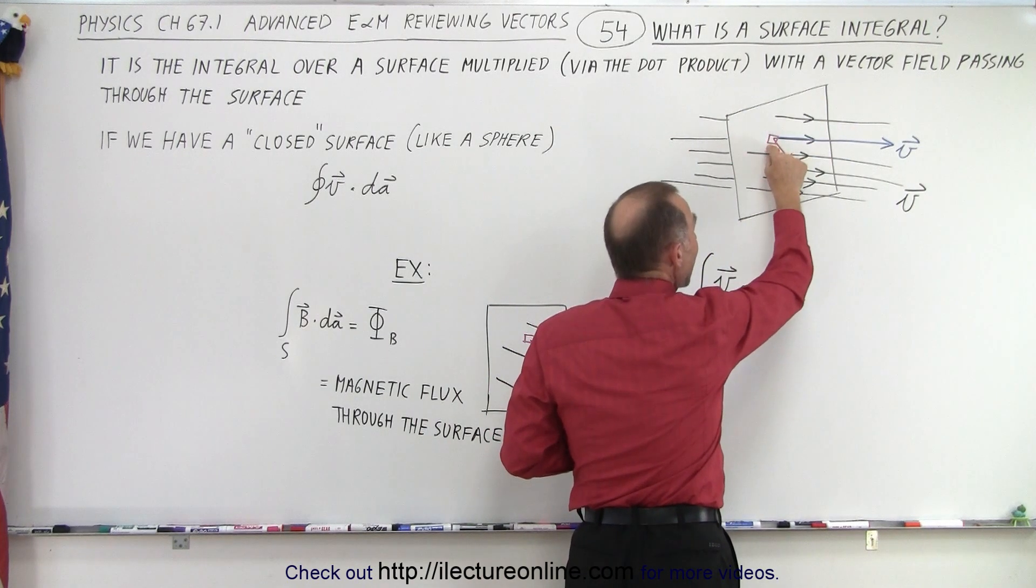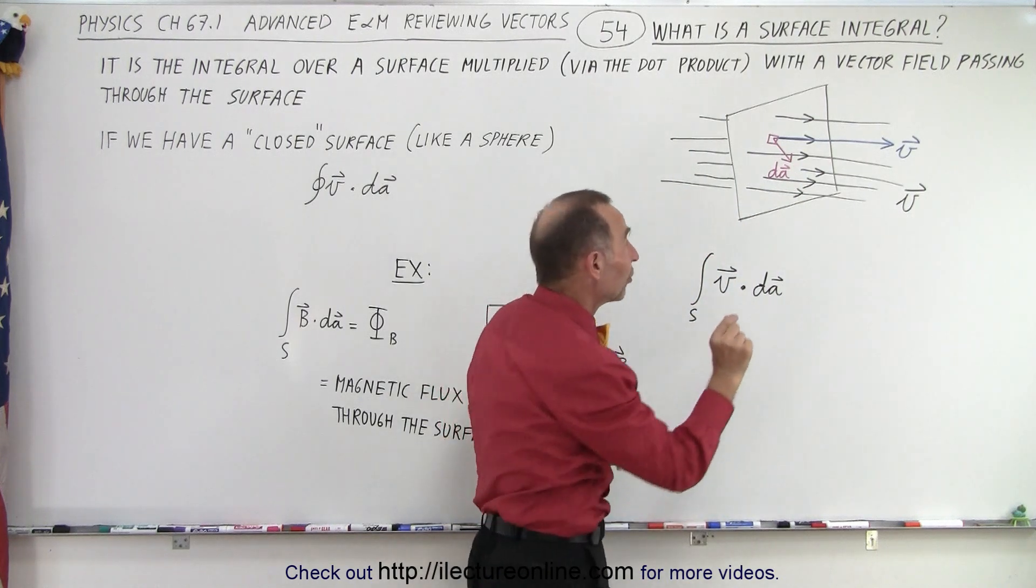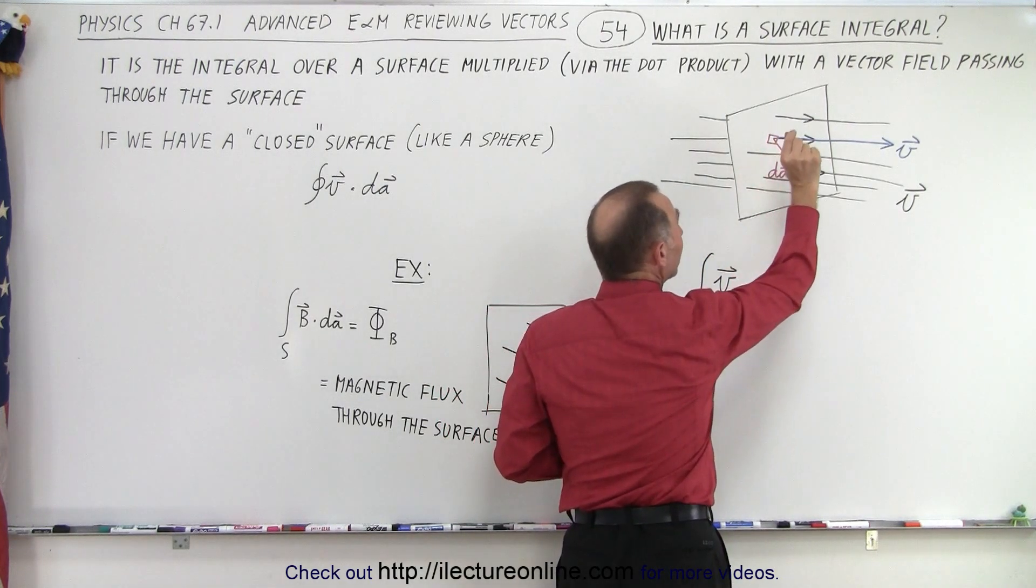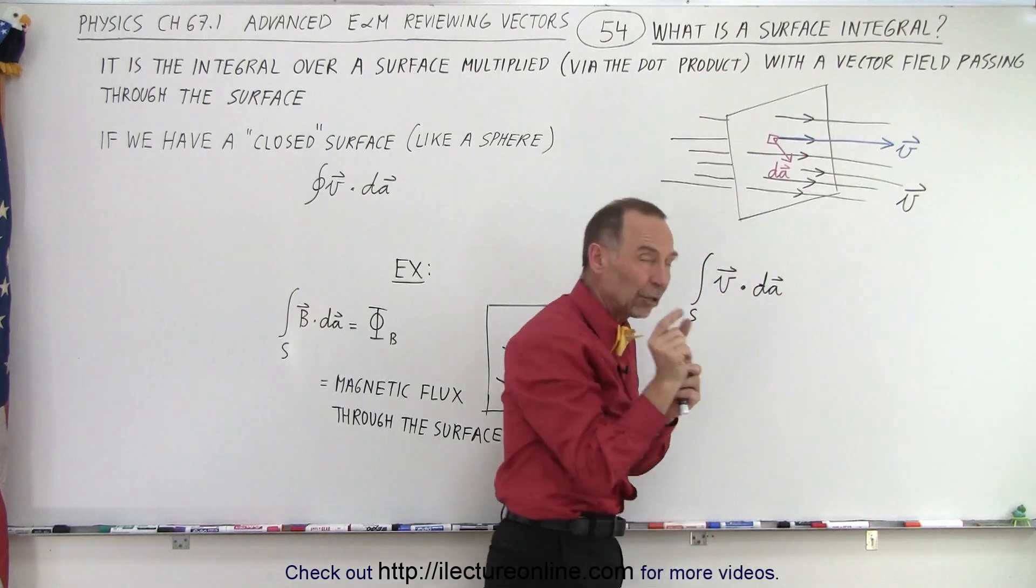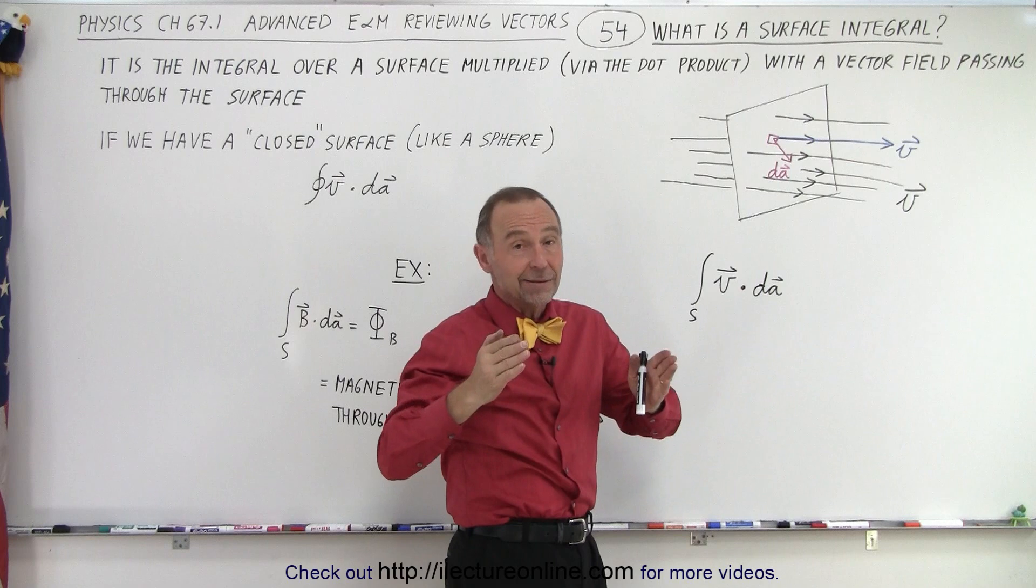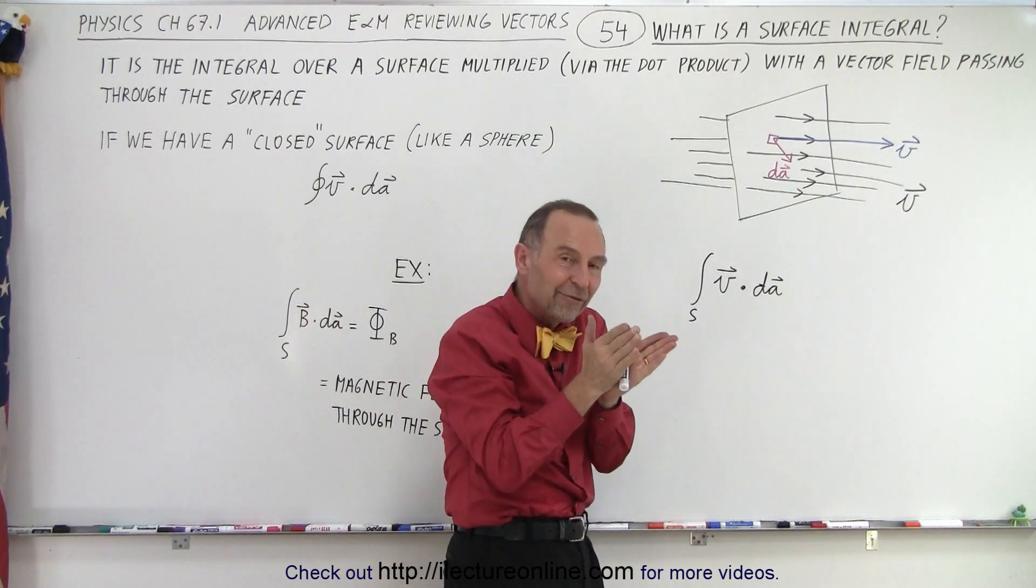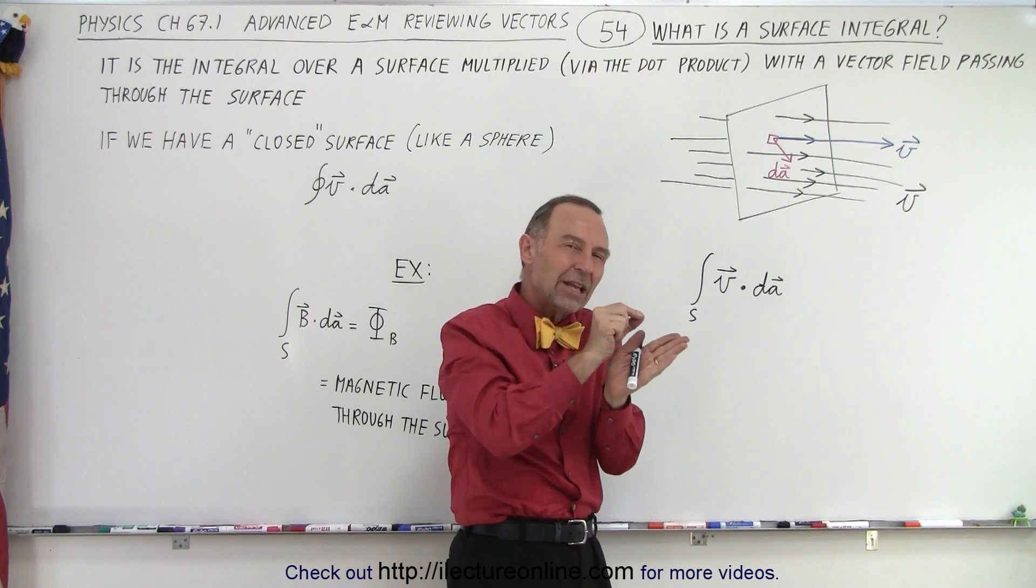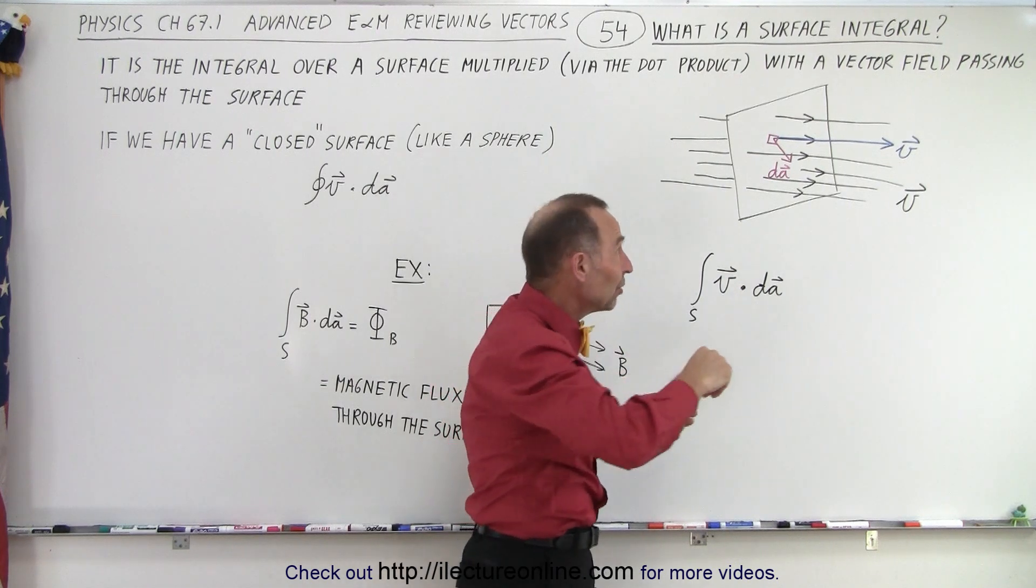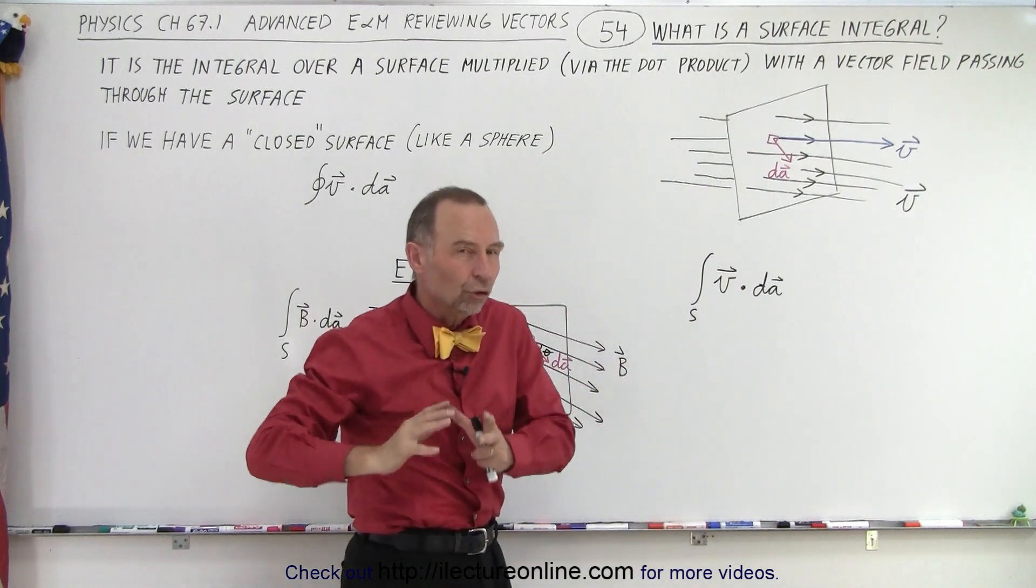And then the dA, the small area element, is essentially a unit vector pointing perpendicular out away from the surface. We take that unit vector and multiply it via the dot product with the vector at that particular location on the surface, and then we simply integrate that across the entire surface, and that's what we call a surface integral.